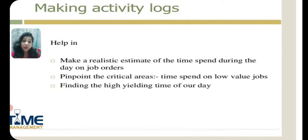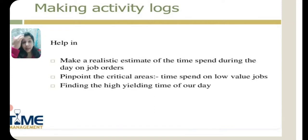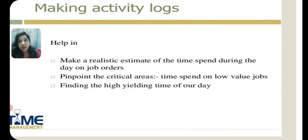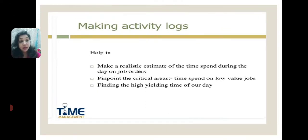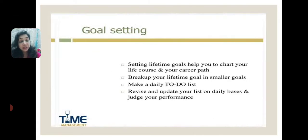Then pinpoint the critical areas — time spent on low-value jobs. Certain low-value tasks you can finish off quickly and don't need much time. Then find the high-yielding time of your day. Certain things you can't do at the end of the day — for example, doing yoga or a workout. The best time for all these things is early morning. At the end of the day, after a whole day's work you'll be tired, and if you keep these activities then, you won't be able to give your best or yield the best results.